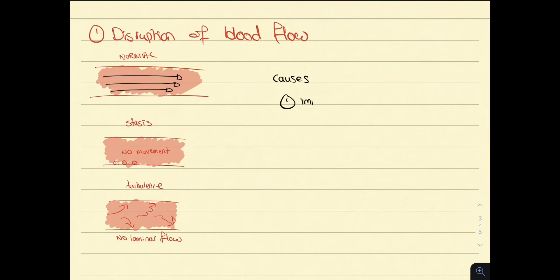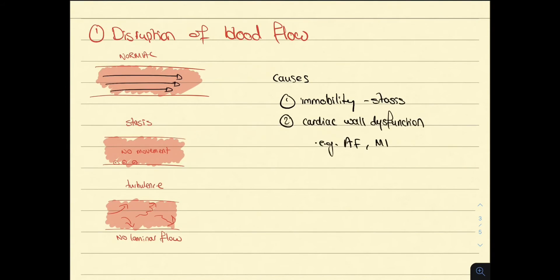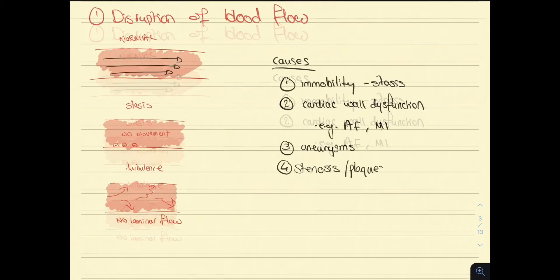So what are the causes of disruption to blood flow? These include immobility, which results in stasis, cardiac wall dysfunction, for example atrial fibrillation and myocardial infarction, aneurysms, and stenosis, which results in turbulent flow.